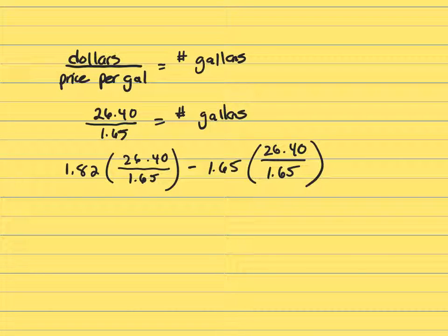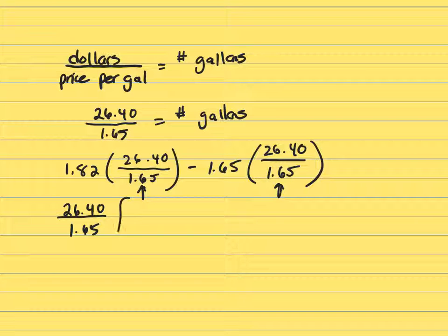And that difference will be how much more she pays this week. You've got this common factor—I would factor that out. $26.40 divided by $1.65. If you factor that out of each term, you're left with $1.82 minus $1.65.